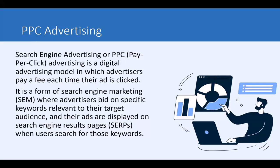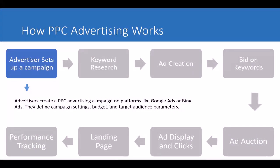Now let's look at this graphic showing how PPC advertising works. First, you as the advertiser set up a campaign. You create a PPC advertising campaign on platforms like Google Ads or Bing Ads, and you define your campaign settings, budget, target audience parameters, and other parameters. This is where you actually set up your advertising to promote your products and website.